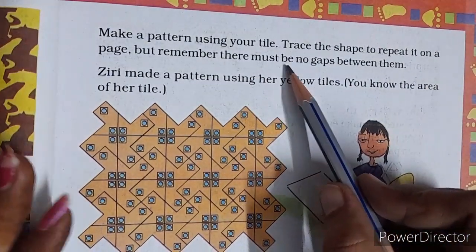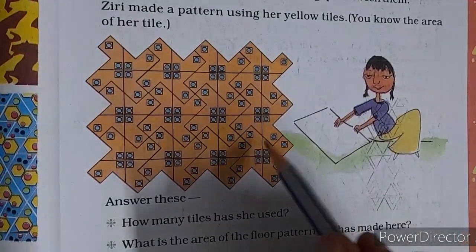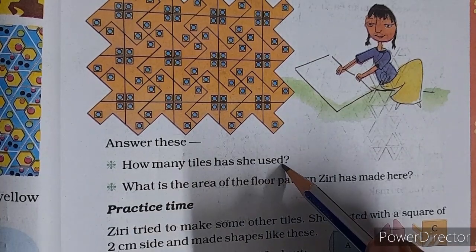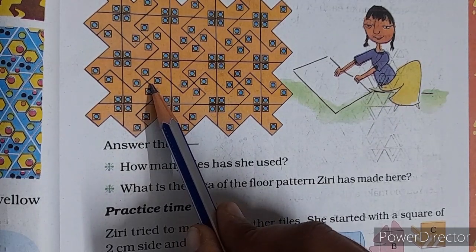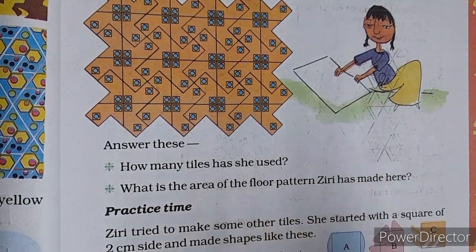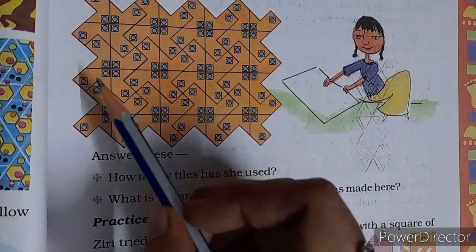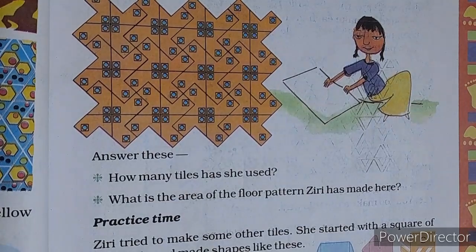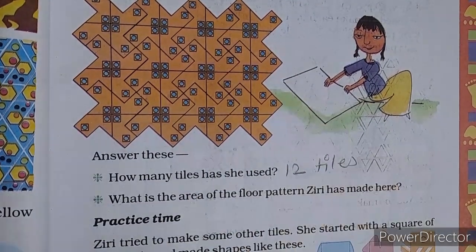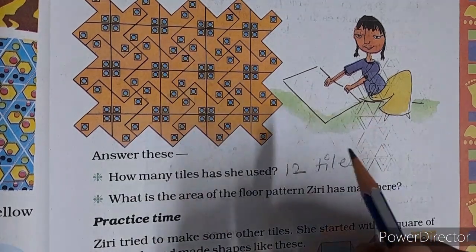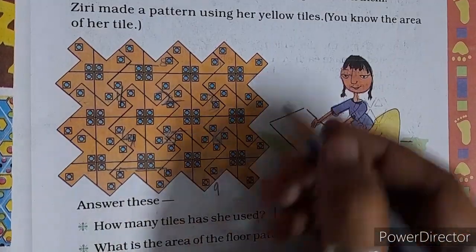Make a pattern using your tile. You have to make your tile. Trace the same to repeat it on a page, but remember there must be no gaps between them. Ziri made a design using yellow tiles like this. Now you need to tell how many tiles she has used. So one, two, three, four, five, six full, one more than half, and nine quarterly, meaning one fourth. One, two, three, four, five, six. This way, total how many she has used?